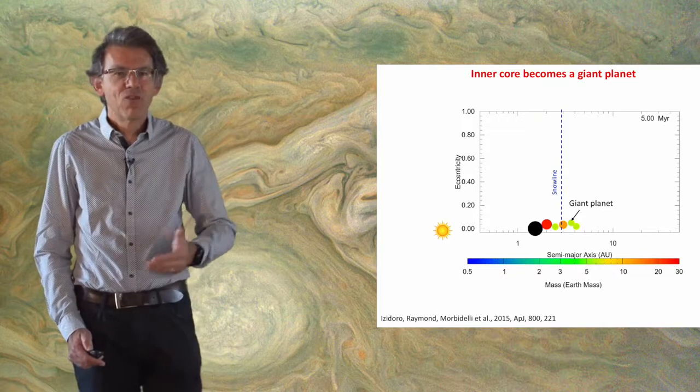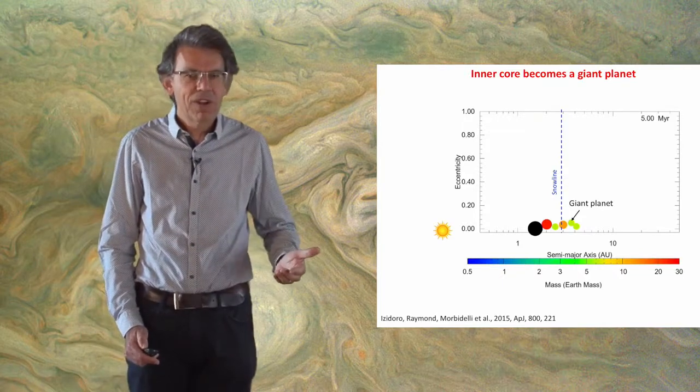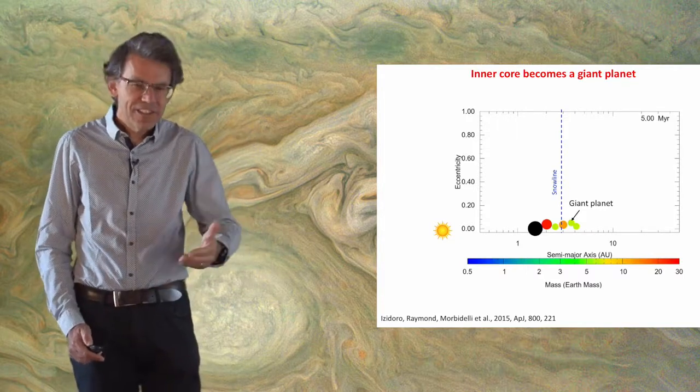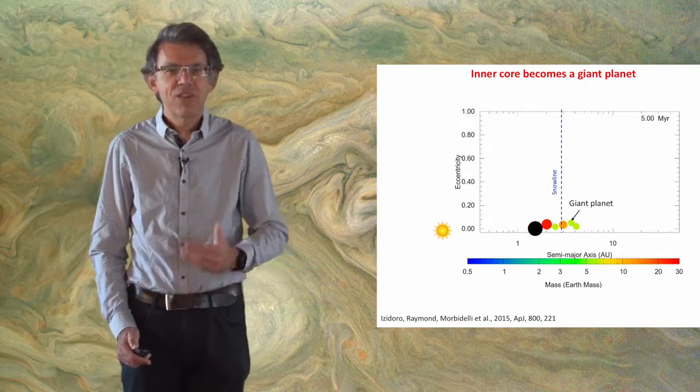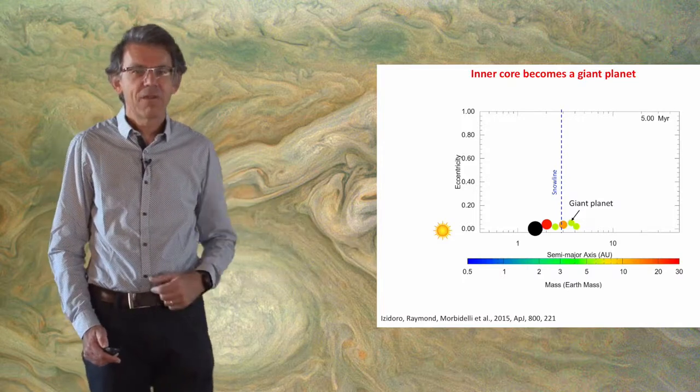As an analogy, we can think of a group of sports cars that queue up behind a truck on a mountain road. It's very difficult to pass the truck, and it's the same for the super-Earths—they migrate faster than giant planets, but it's very difficult for them to pass the giant planet and continue their migration towards the inner part of the system.